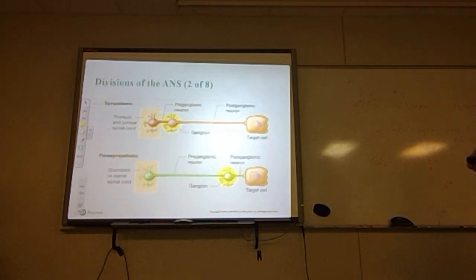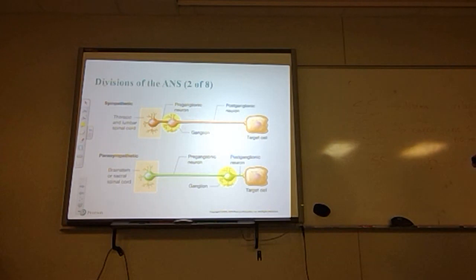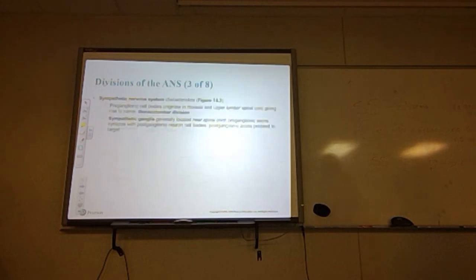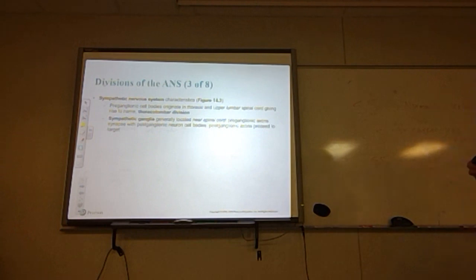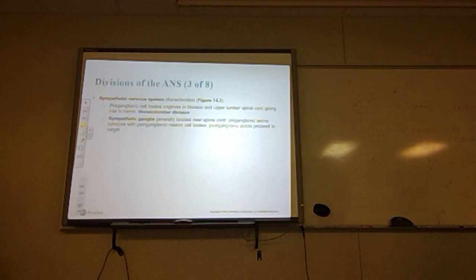Here in the diagram you can see the thoracic and lumbar vertebrae for the spinal cord and spinal nerve. There's the ganglion with the long post-ganglionic neuron going to the target cell, and here's the parasympathetic showing the long pre-ganglionic and short post-ganglionic. The pre-ganglionic cell bodies of the sympathetic system originate in either the thoracic or upper lumbar spinal cord, giving rise to its name: the thoracolumbar region.